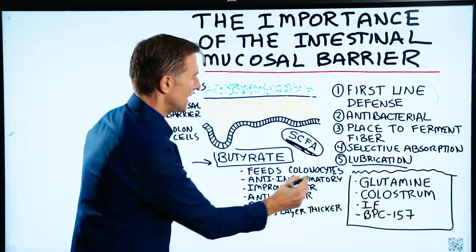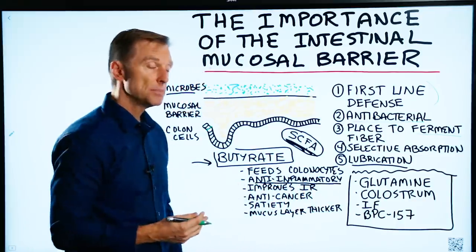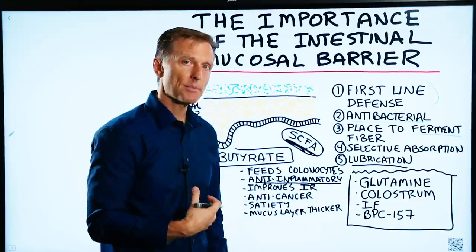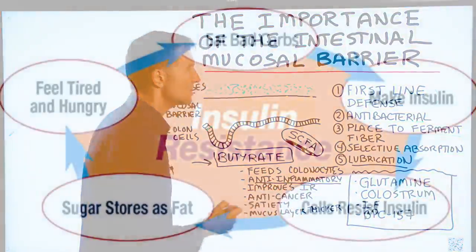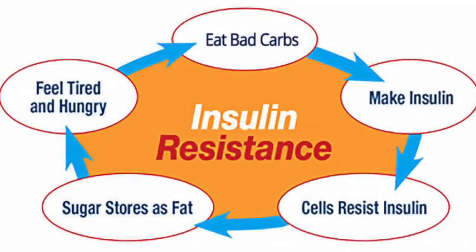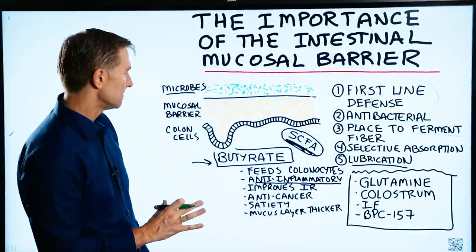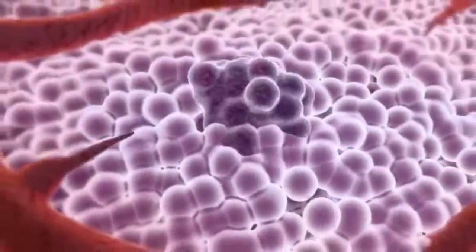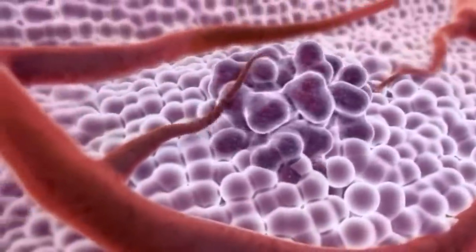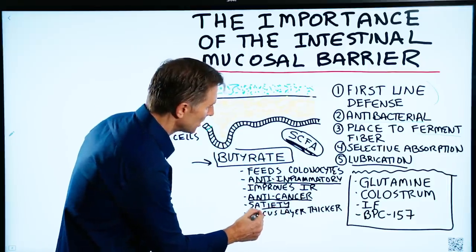Butyrate is also anti-inflammatory, so it's very beneficial for people with inflammatory bowel conditions. It also improves insulin resistance and helps your blood sugars, just like beta-hydroxybutyrate, which is one of the ketones — very similar. Butyrate is also anti-cancer in things like polyps and tumors in the colon. It also has satiety properties, helping with hunger and allowing you to feel satisfied.